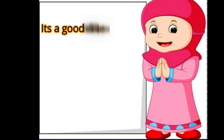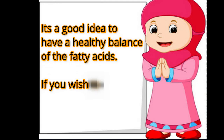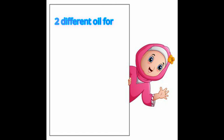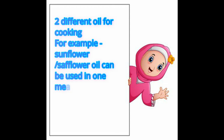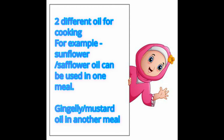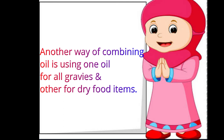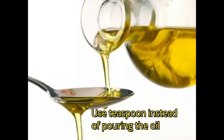It's a good idea to maintain a healthy balance of fatty acids. If you wish to blend oils, make sure you blend the right proportions of two different oils for cooking. For example, sunflower oil and mustard oil can be used for different meals. Another way of combining oils is using one oil for all gravies and another for dry food items.